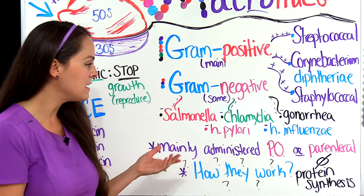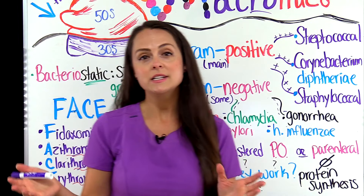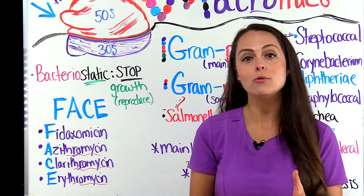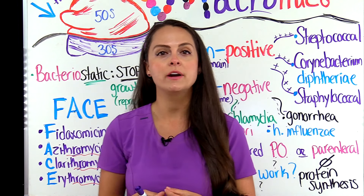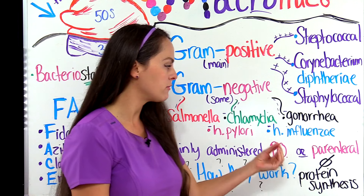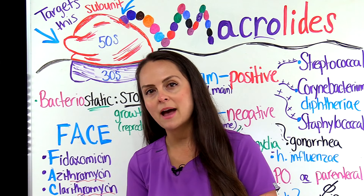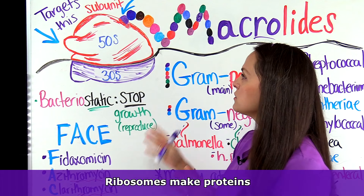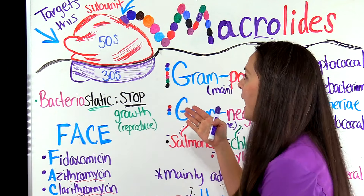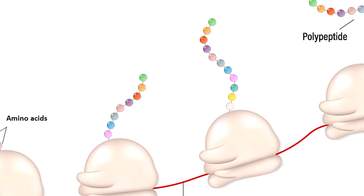How they do this is that they inhibit the protein synthesis of that bacteria — so we're talking about the creation of proteins. Proteins are a very important structure for the bacteria; they need healthy proteins that function correctly in order to survive and thrive. But if we can somehow stop or inhibit this process of creating proteins, we can get rid of the bacteria. So what we want to do is target the structure in the bacteria that creates the proteins, and that is the ribosome. The ribosome is made up of a large subunit known as 50S and a smaller subunit known as 30S, and these two subunits come together to stack amino acids and create a polypeptide chain — hence our protein.